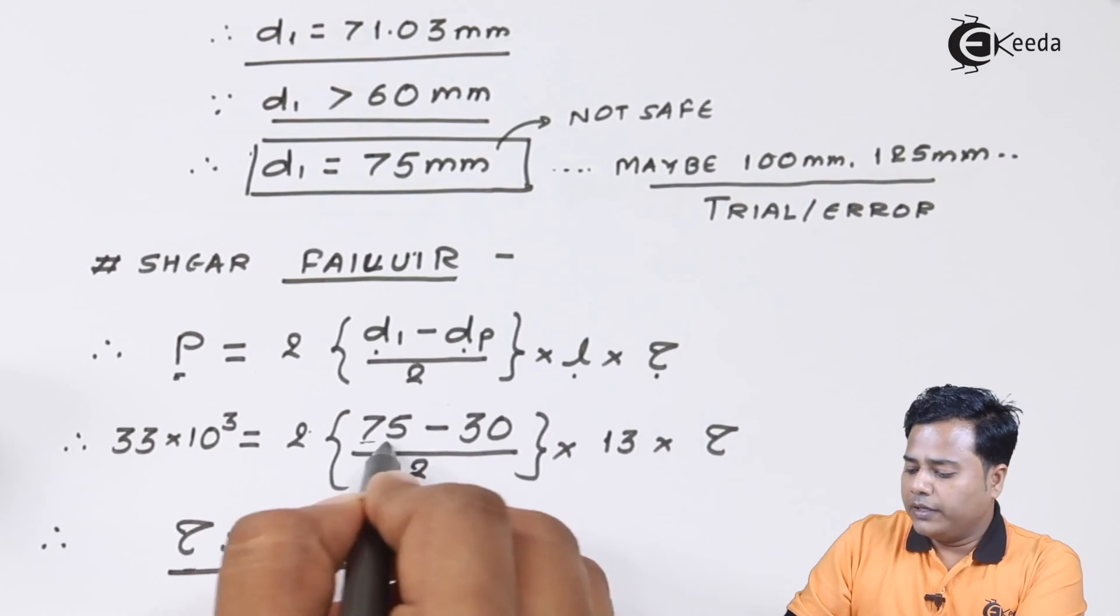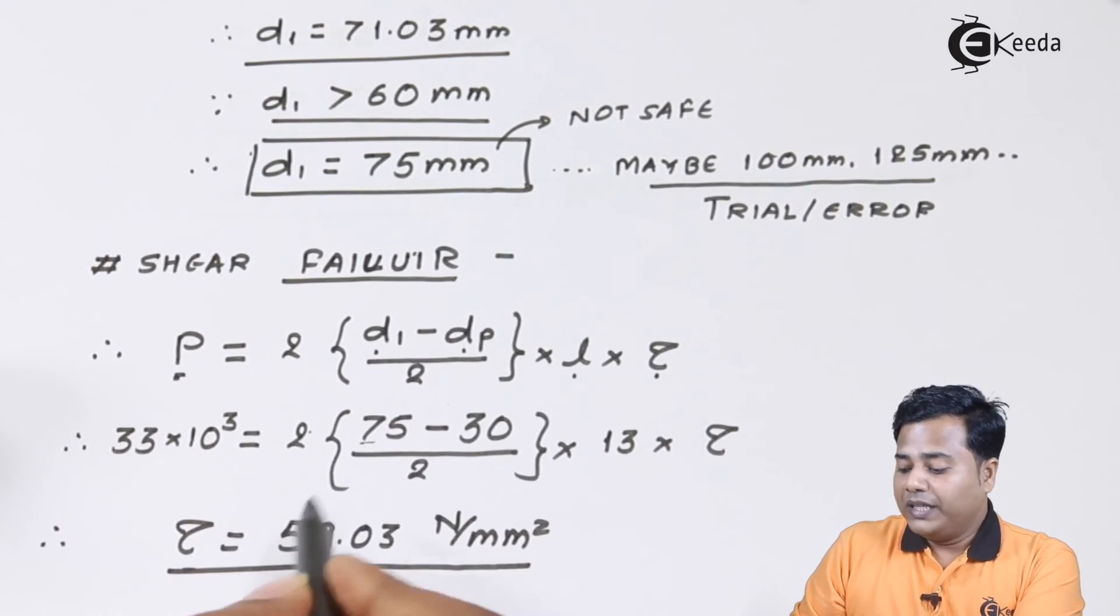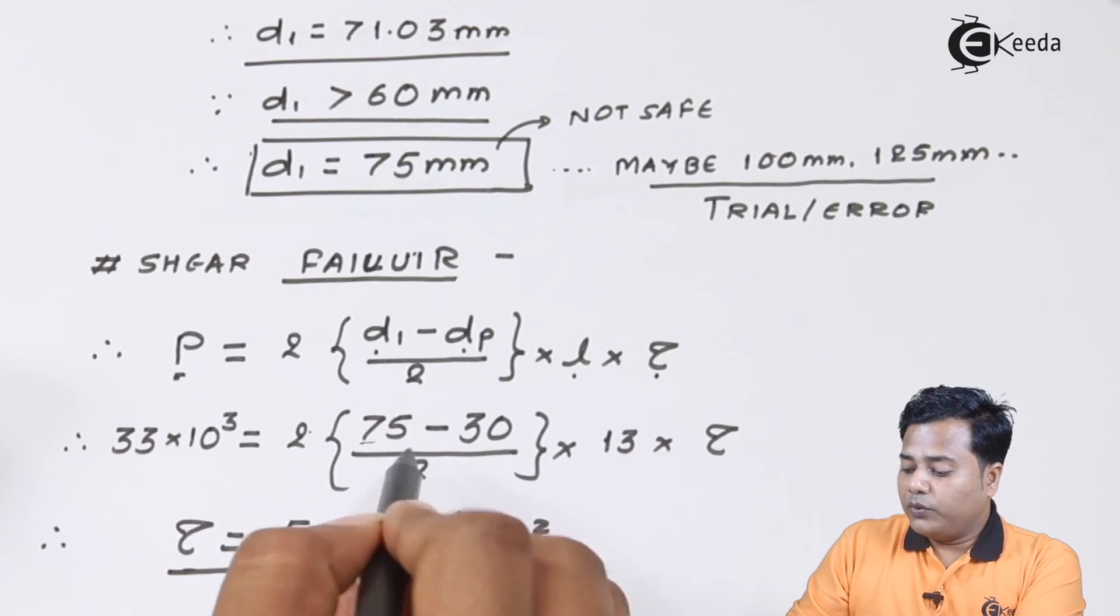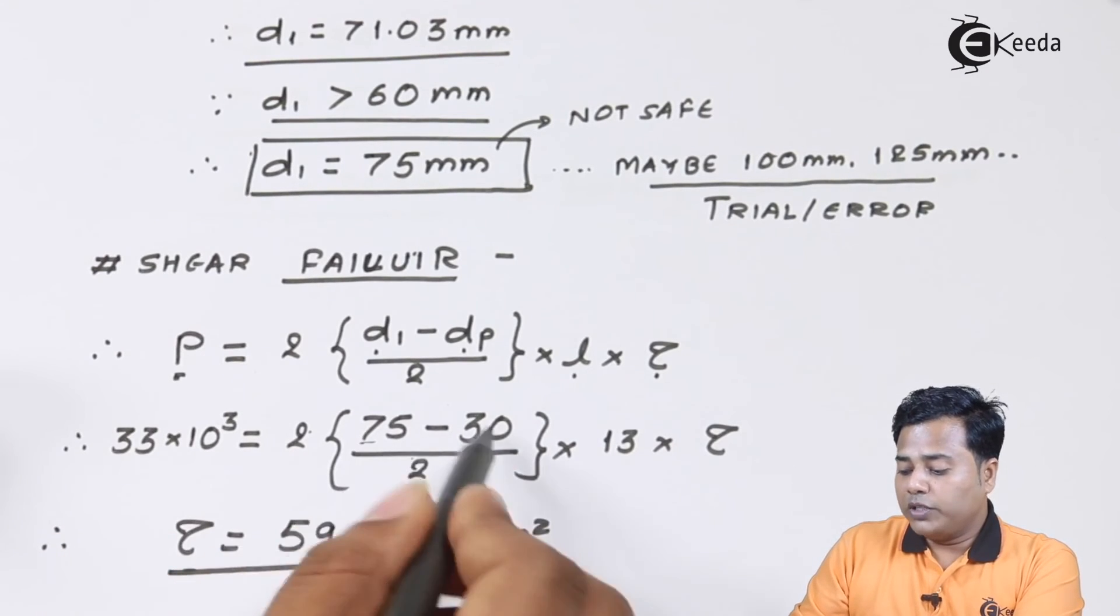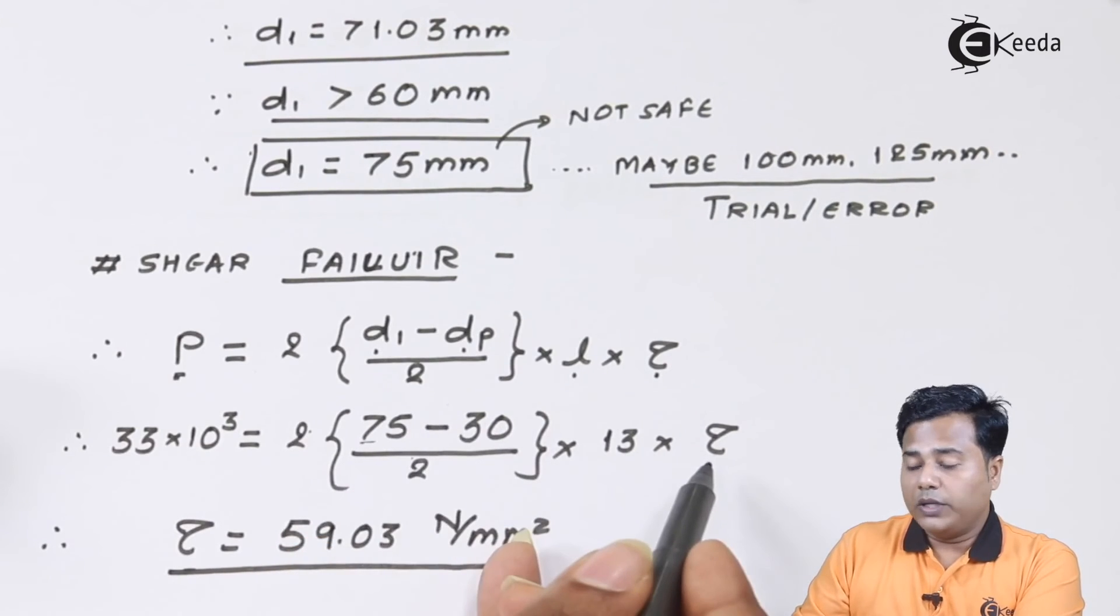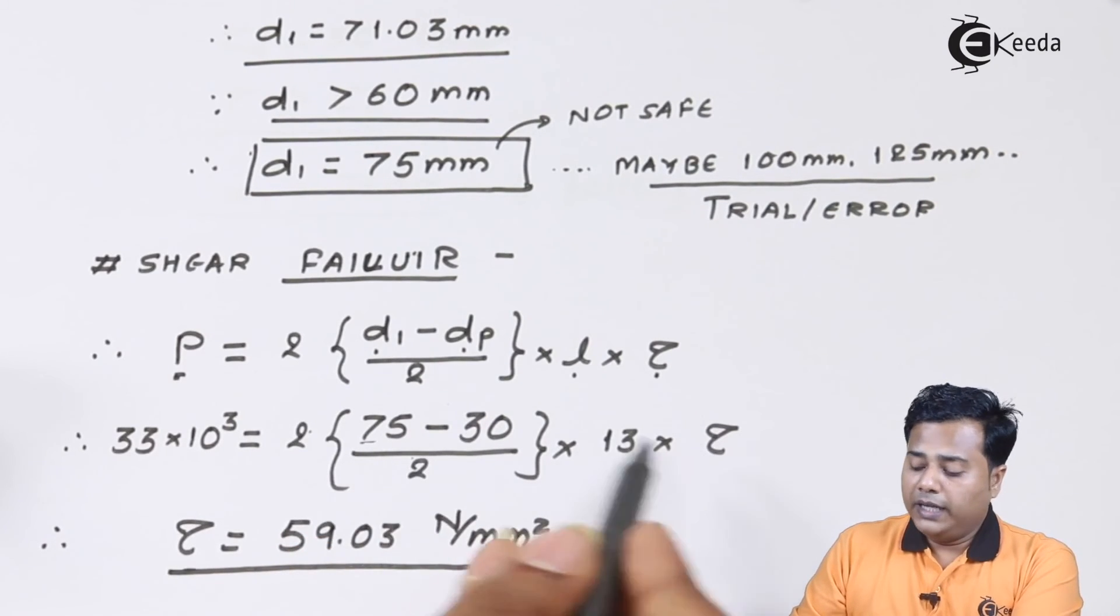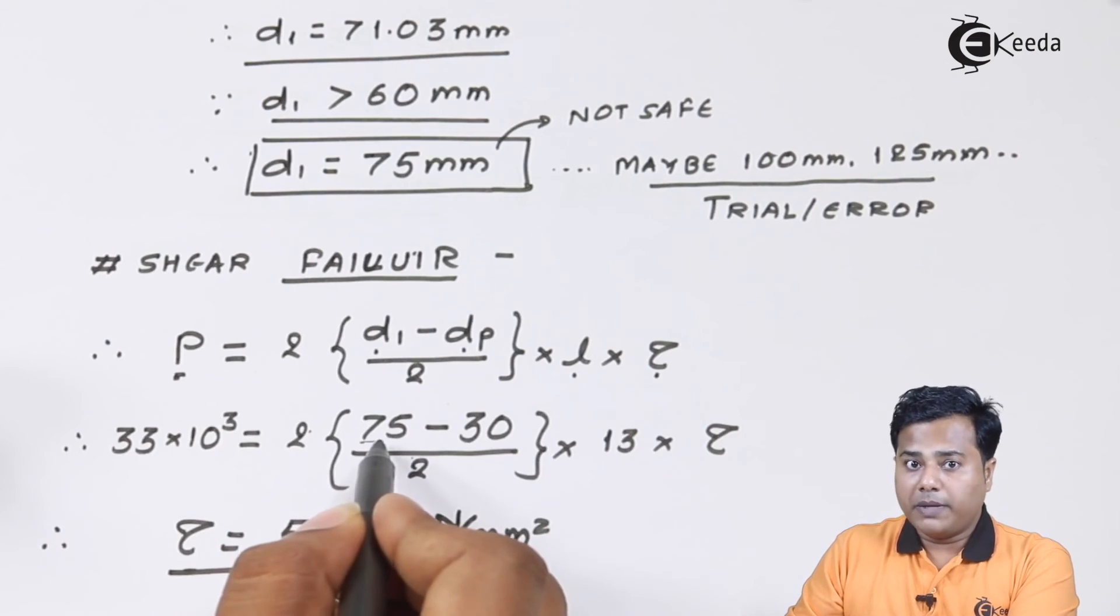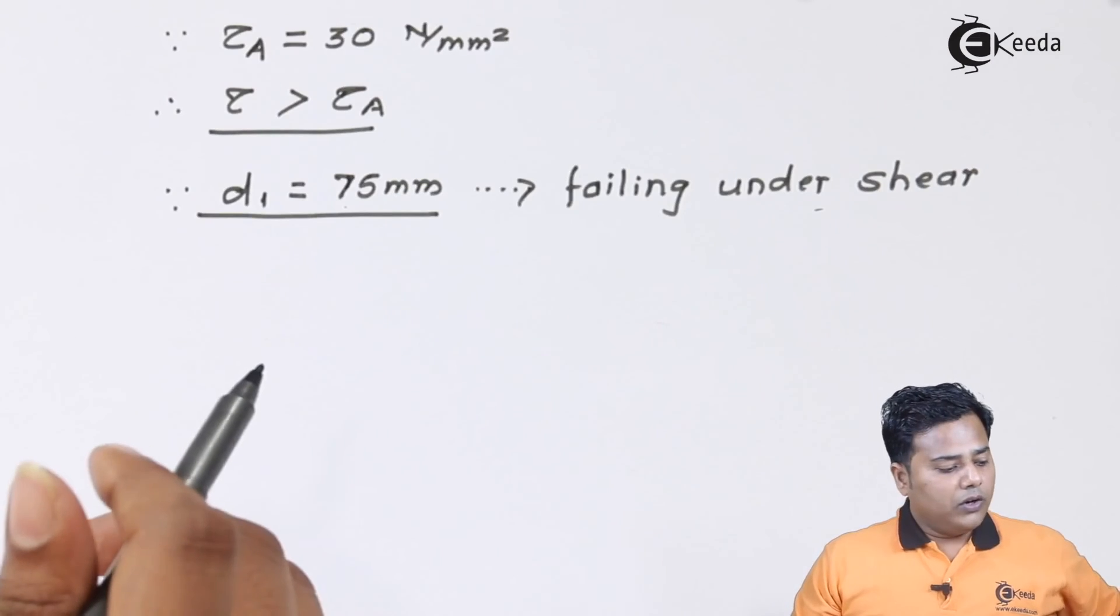To get the value of τ, we know that the value of τ is actually inversely proportional with this particular thing. As this goes on increasing, the τ value is going to lower. We need to increase this particular parameter.